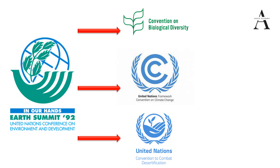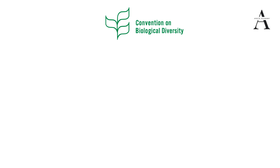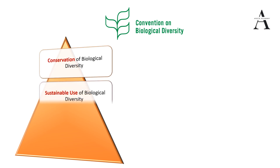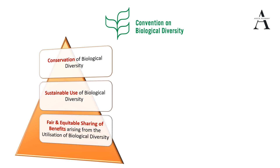The Convention on Biological Diversity had three main goals: first, the conservation of biological diversity; second, the sustainable use of biological diversity; and third, the fair and equitable sharing of benefits arising from the utilization of biological diversity, particularly the commercial utilization of genetic resources in a fair and equitable manner.